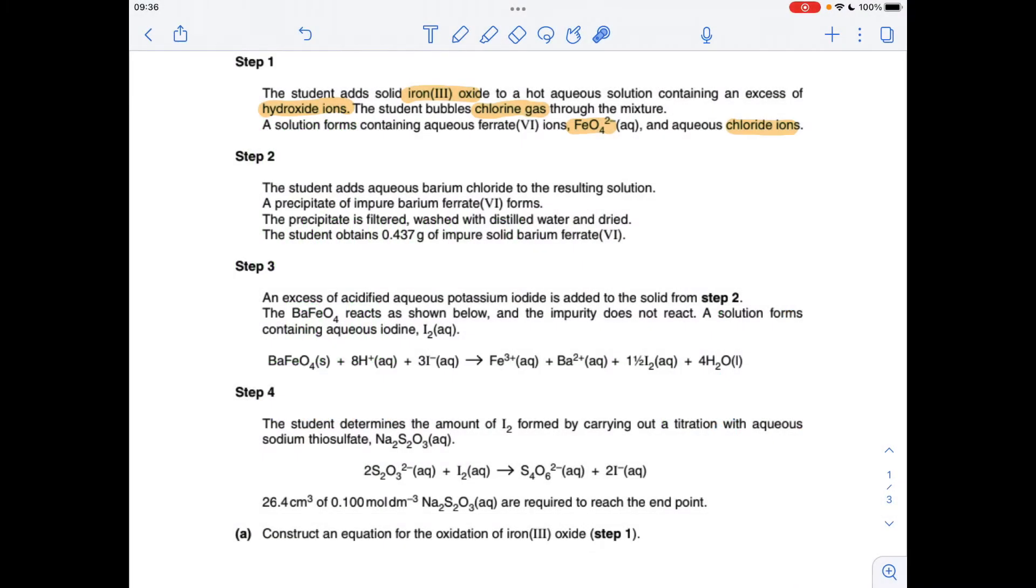The first thing I'm going to do is construct an equation for step one, the oxidation of iron(III) oxide. I've just highlighted the reactants and products. But the thing we've got to bear in mind is, if you look at the reactants, you've got iron and oxygen in that, hydrogen and oxygen in that, and chlorine. There's no hydrogen in the products, so it's likely that we're going to need water in this equation.